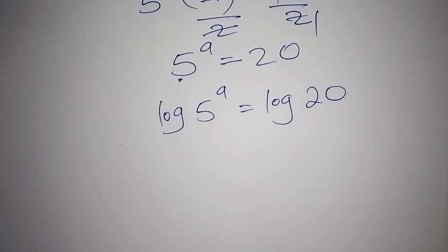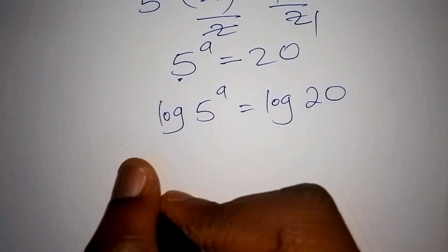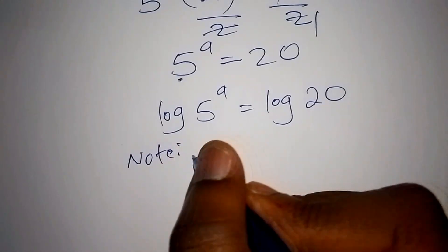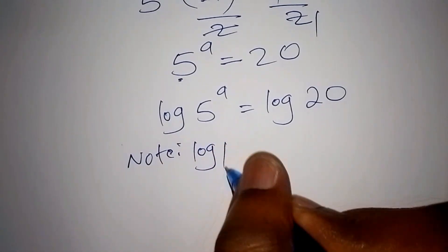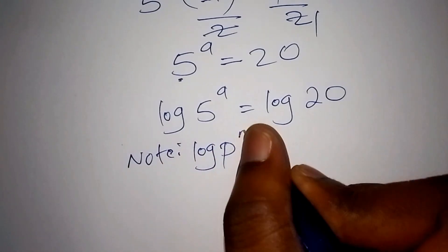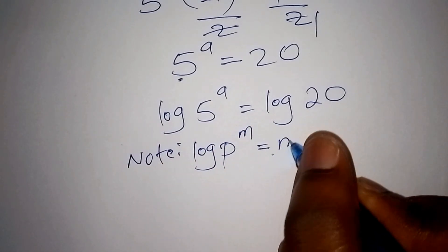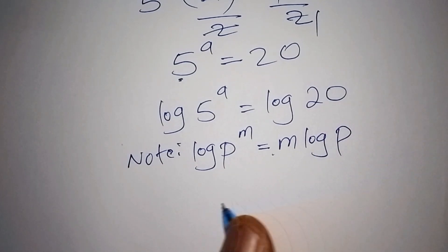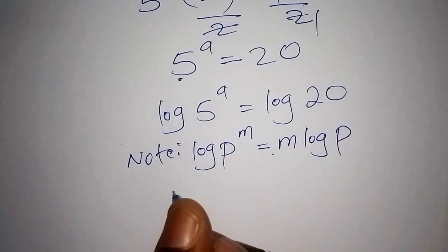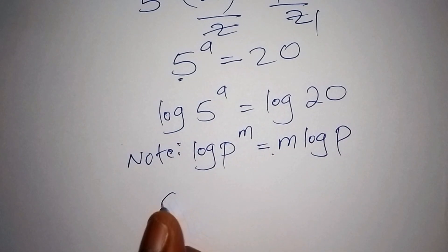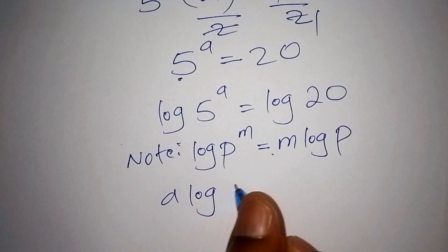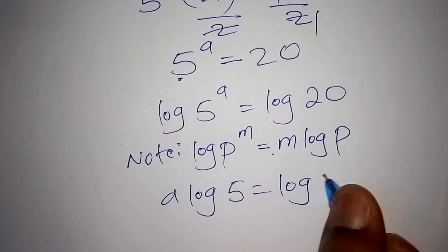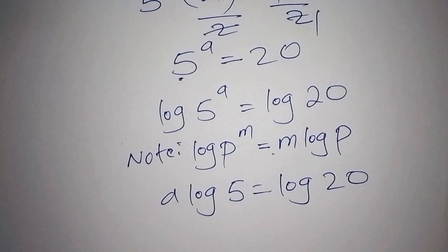Note that if we have log of p to the power of m, this can also be written as m times log of p. So the log of 5 to the power of a can be written as a times log of 5, equals log of 20.